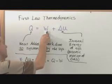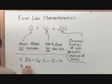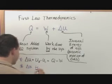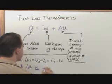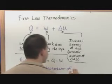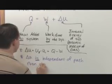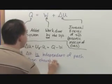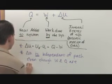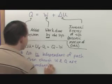So this variable is dependent upon the path, and this variable is dependent upon the path. It turns out something very cool, and that is delta U is independent of path, even though W and Q are dependent on the path.